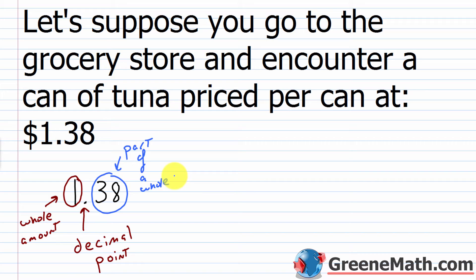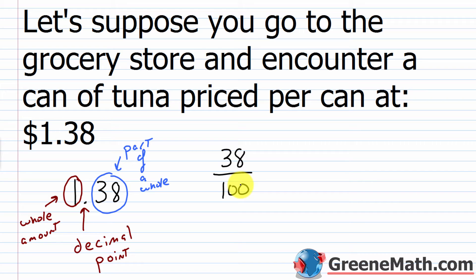We've already seen this concept with fractions. If I think about $1.38 using fractions, the $1 is a whole amount. Think about 38 cents — it takes 100 pennies to make a dollar. If I only have 38 pennies out of 100, I have 38 parts out of the 100 needed to make a whole amount. The denominator is the whole amount split up into equal parts. So 0.38 is the same thing as 38 over 100.